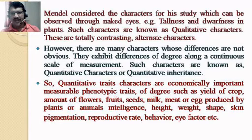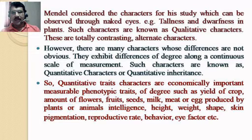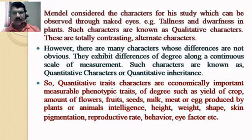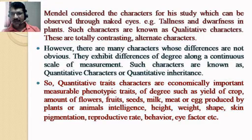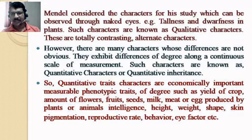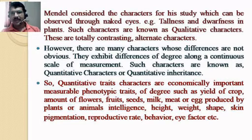Mendel considered characters for his study which can be observed through naked eyes — for example, tallness and dwarfness in plants. Such characters are known as qualitative characters. All of Mendel's discoveries depend upon qualitative inheritance, where he chose different types of characters easily observable by naked eyes. In respect to height of plants, tallness and dwarfness are two contrasting characters.